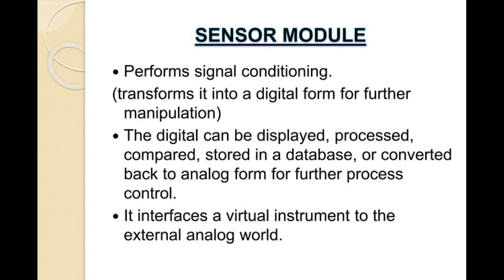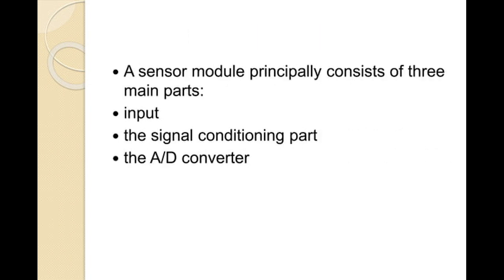In the sensor module, it performs signal conditioning. The digital signal can be displayed, processed, compared, stored in a database, and converted back to analog form for further processing and control. It interfaces virtual instrumentation to the external analog world. A sensor module principally consists of three main parts: inputs, the signal conditioning part, and the analog-to-digital converter.